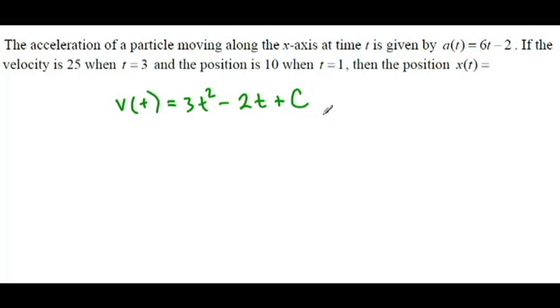Now, they've given us that v(3) = 25. Now, we're going to have to take the antiderivative again to find position, and our c's might get confusing. So I'm going to call this c₁. That's my first c.